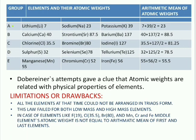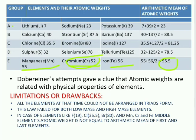In the same manner, for manganese, chromium, and iron — if you take the arithmetic mean of manganese and iron, it is 55.5. But chromium's atomic mass is 52. So this theory couldn't explain all the elements and their properties clearly.